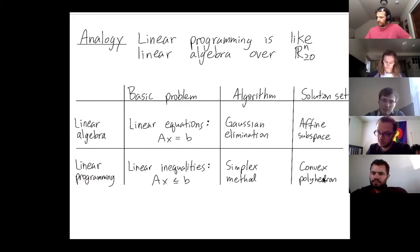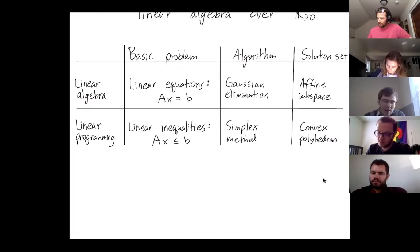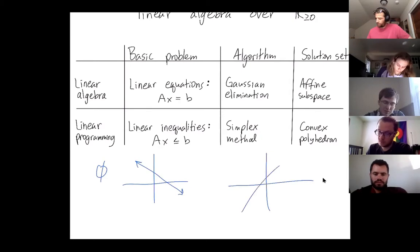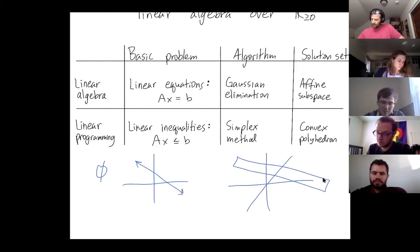The solution set is going to be an affine subspace. So it might be the empty set, or it might be a line, or it might be a plane, et cetera. You know, a linear subspace has to go through the origin.